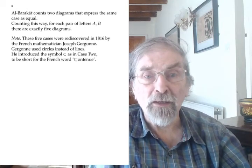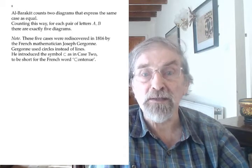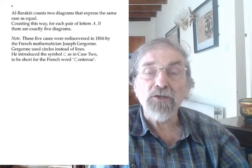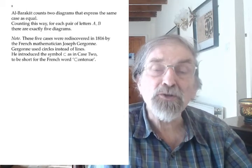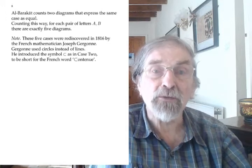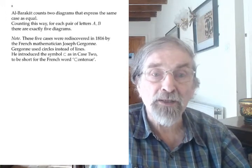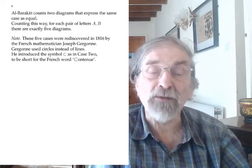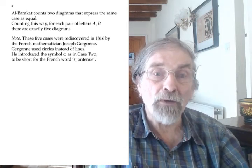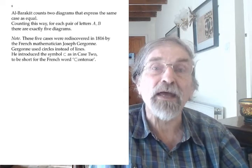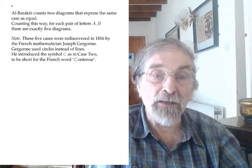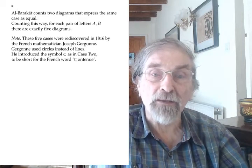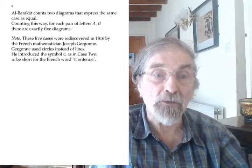A historical point: these five cases were rediscovered in 1816 by a famous French mathematician called Gergonne. He did it a bit differently from al-Barakat — he didn't choose horizontal lines; instead he used circles and parts of circles, and some of that has come down into the modern notation for set theory. In case two, where one set is a proper subset of another, Gergonne wrote in French 'contenu' — the French for 'contained' — and took the capital C at the beginning of 'contenu' as a symbol for this case. You can see that a capital C is quite like the symbol that set theorists still use for set inclusion.